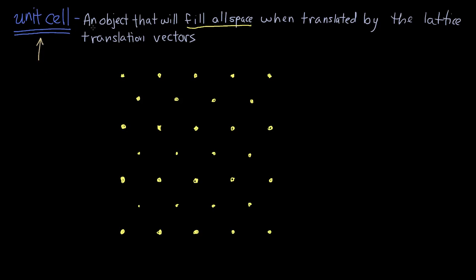A unit cell is an object that will fill all space when translated by the lattice translation vectors. I think that the easiest way to understand this is with an example. So I've drawn out this 2D set of points here. You remember from the videos on lattices, this can have two different types of lattices attributed to it, this series of points.